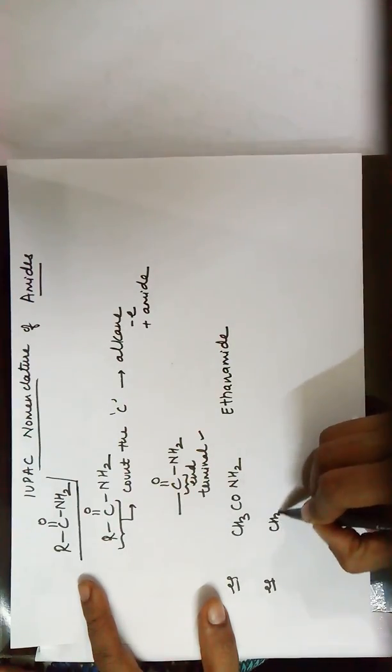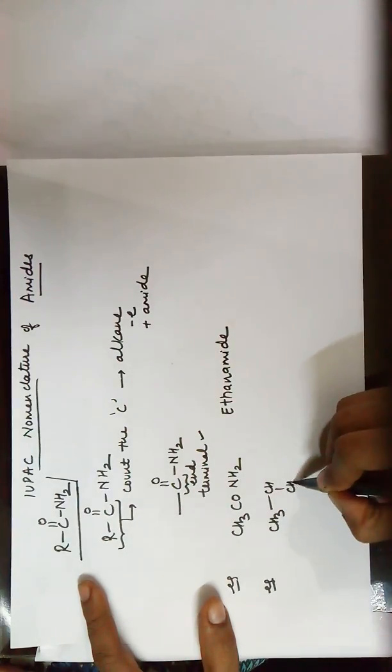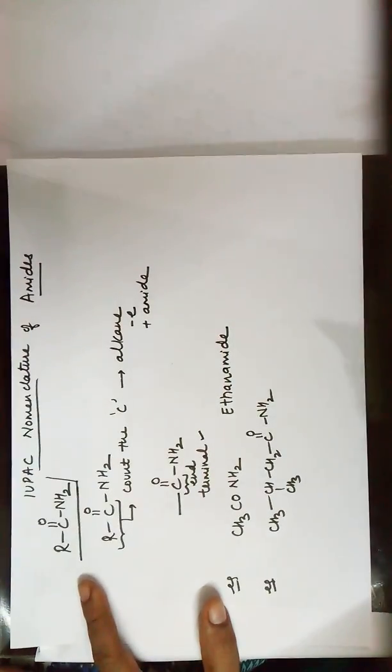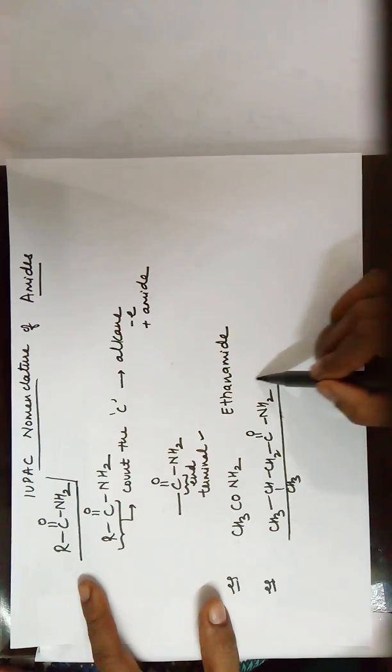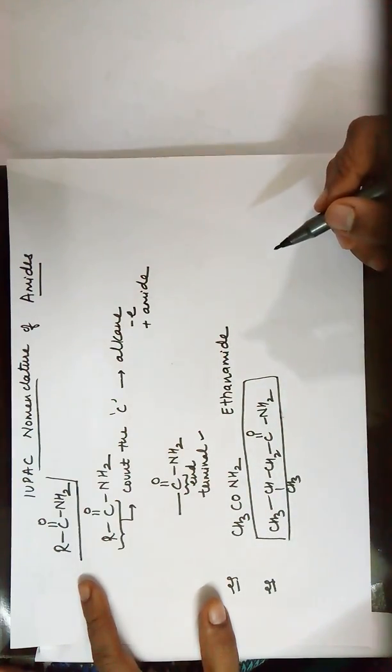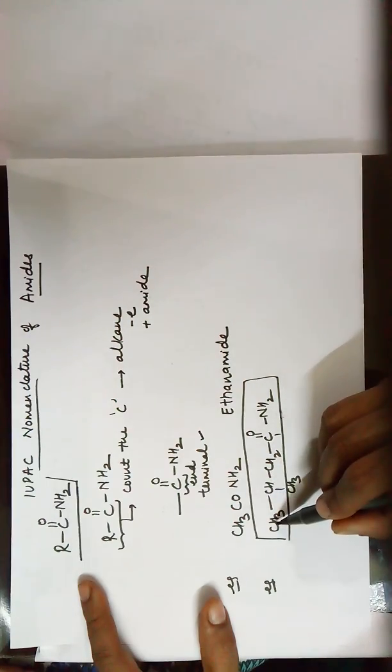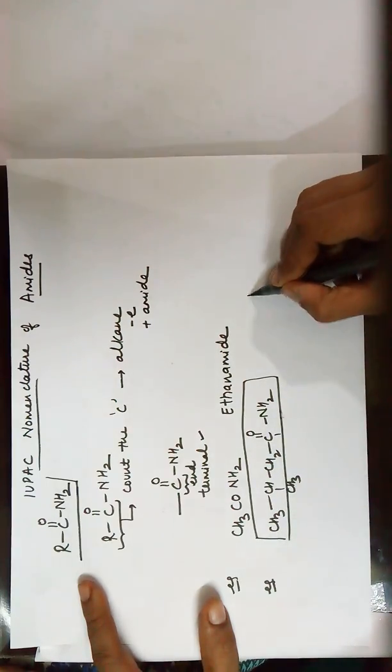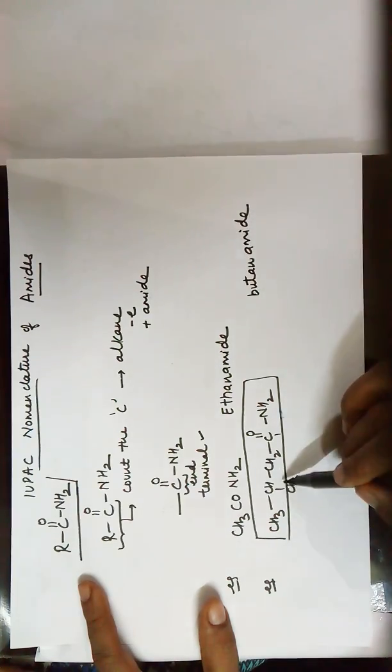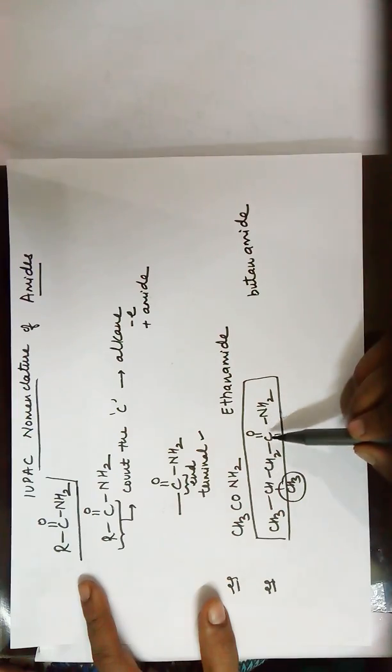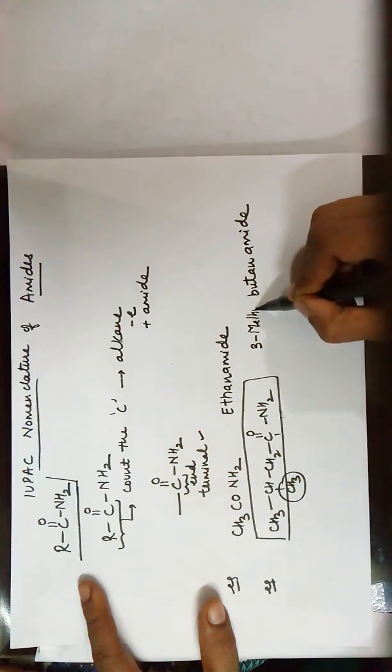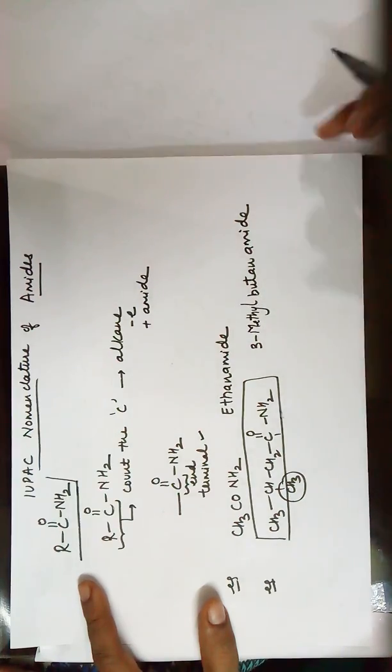Let's take another example. In this amide, that's the longest chain or the parent chain of carbons. This parent chain of carbons has got one, two, three, four carbons in it. So the name is butanamide, but you have a methyl group. This methyl group is at the third position, so it is named 3-methylbutanamide.